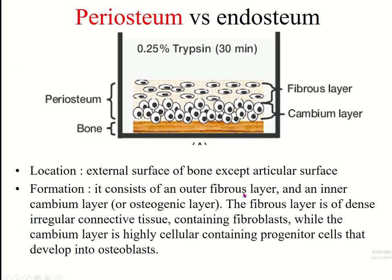The next terminology is periosteum versus endosteum. The location of the periosteum is the external surface of the bone, except articular surfaces — the part of the bone which takes part in joint formation. This part is lined by articular cartilage. The rest of the bone is surrounded by a connective tissue membrane known as the periosteum.